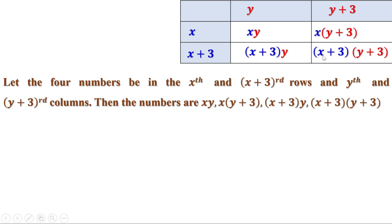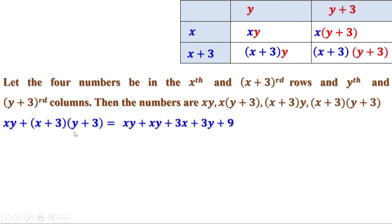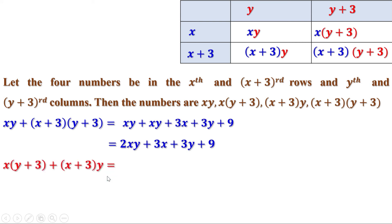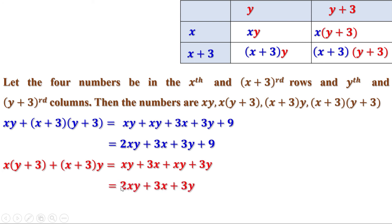Now let us find the diagonal sum xy plus x plus 3 into y plus 3. x into y is xy, x into 3 is 3x, 3 into y is 3y, 3 into 3 is 9. So this equals xy plus xy plus 3x plus 3y plus 9, which is 2xy plus 3x plus 3y plus 9. Now the second diagonal sum: x into y plus 3 plus x plus 3 into y. x into y is xy, x into 3 is 3x, x into y is xy, 3 into y is 3y. So this equals xy plus 3x plus xy plus 3y, which is 2xy plus 3x plus 3y.